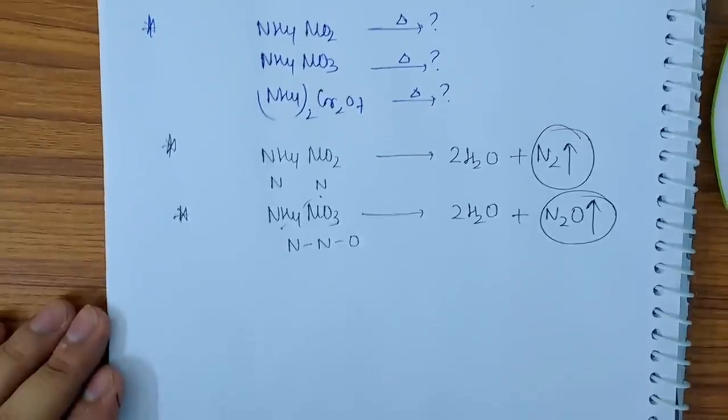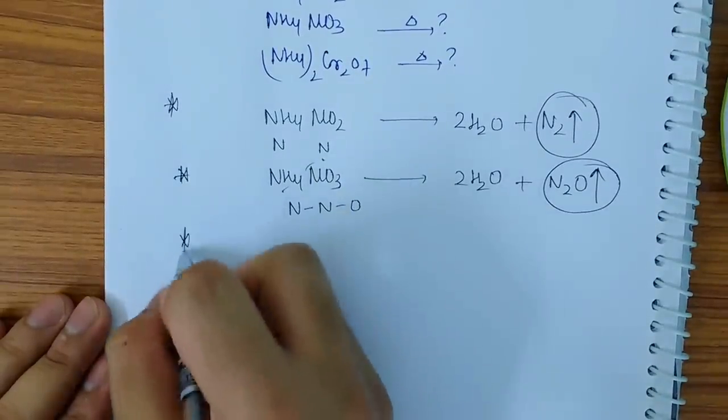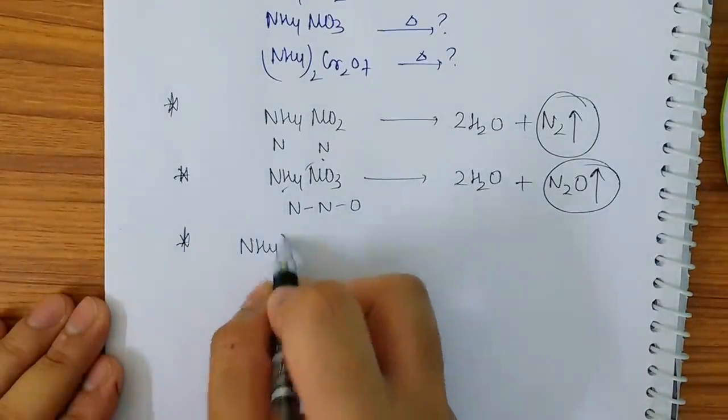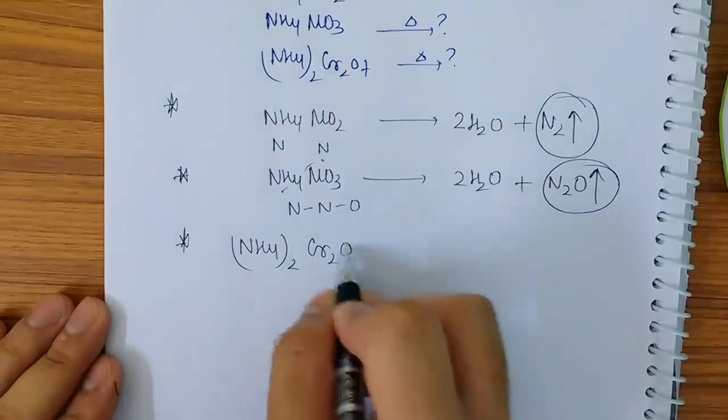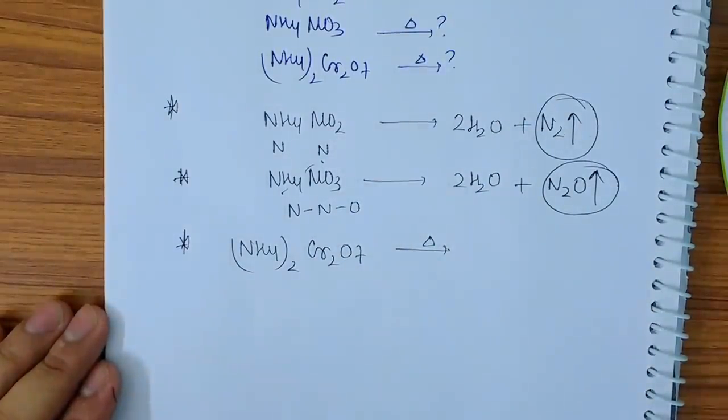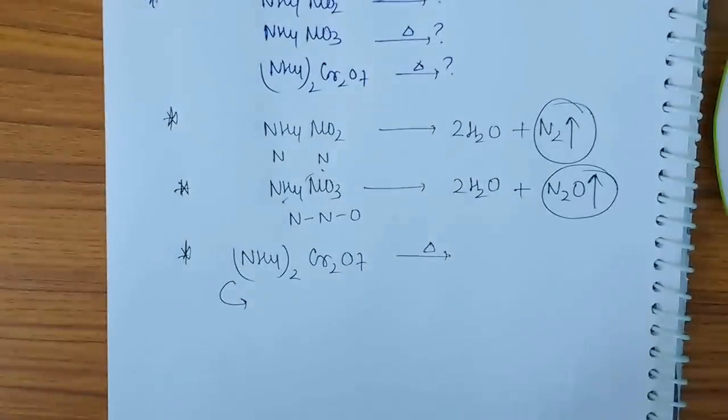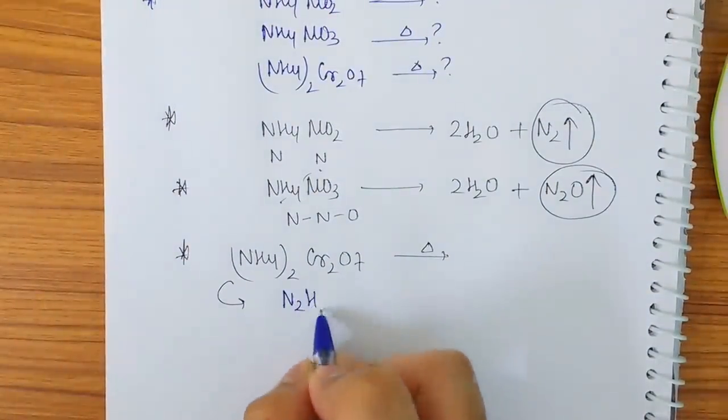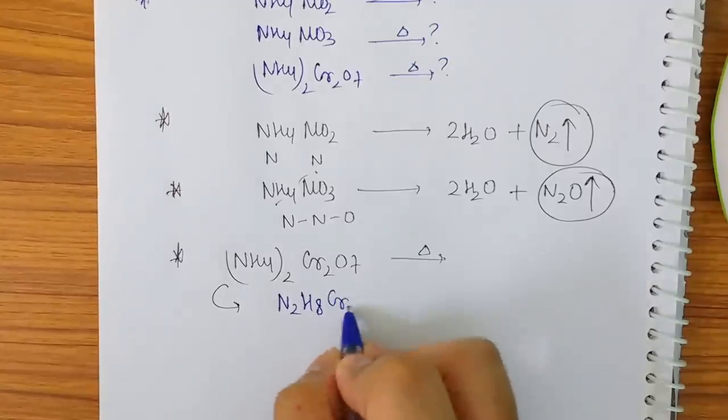Now next thing: (NH4)2Cr2O7 on heating gives what. First of all, write this as a simple compound. I can write this as ammonium dichromate, so I can write this as N2H8Cr2O7.